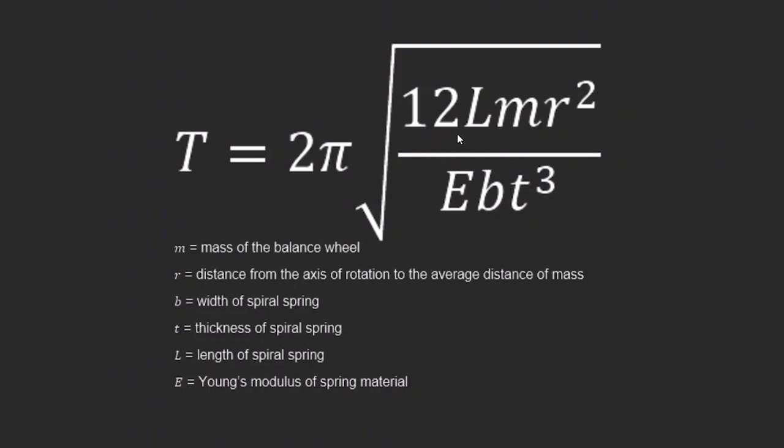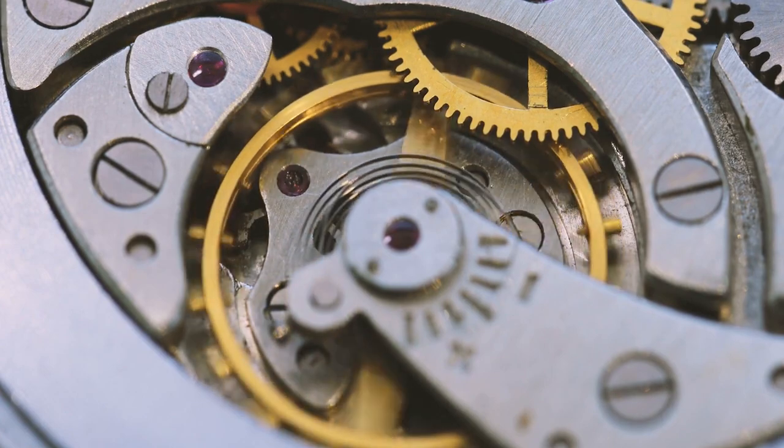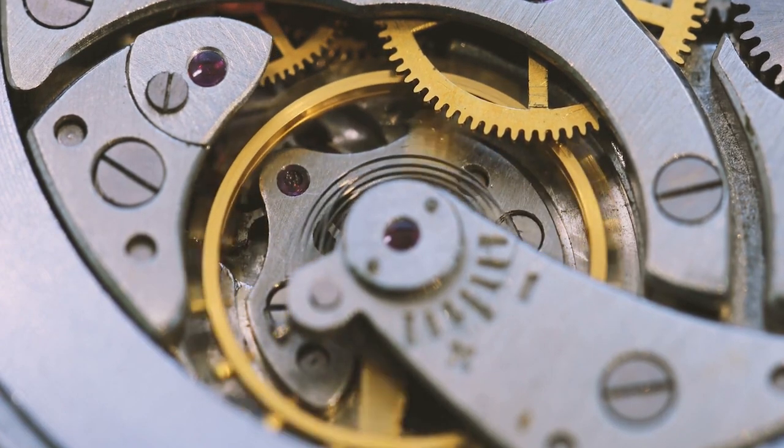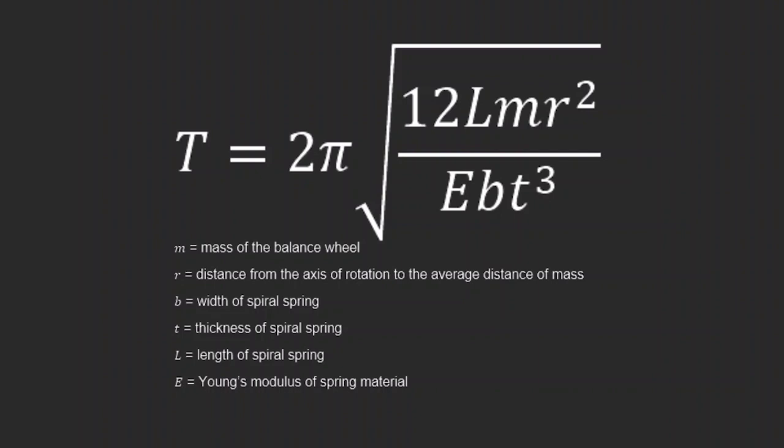12 is a constant. L is the length of the spiral spring. You can adjust this pretty easily. The mass moment of inertia of the balance wheel can be adjusted ever so slightly using small screws on the diameter of the wheel. In the denominator is where the difference between regular mechanical watches and high-end mechanical watches starts to become clear. E is the Young's modulus, a measure of the stiffness of the material. You don't have much control over this. B and T is the width and the thickness of the spiral spring, respectively.